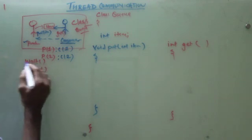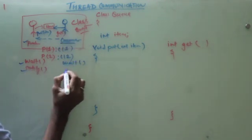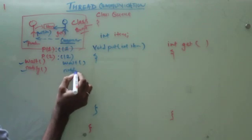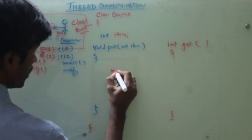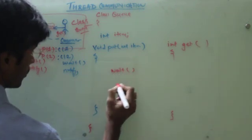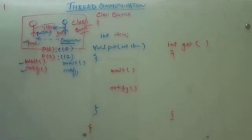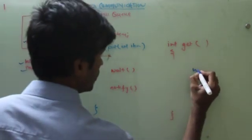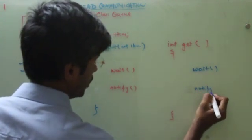Producer has two object methods. Wait and notify. Consumer has two object methods. Wait and notify. We will say wait and notify, wait and notify.